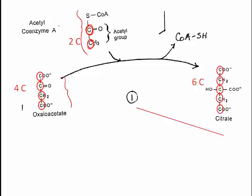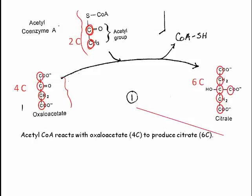The Krebs cycle is also called the citric acid cycle because citrate is actually citric acid, and it's the first thing that forms in the cycle. In this step, acetyl-CoA reacts with oxaloacetate to produce citrate.